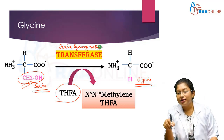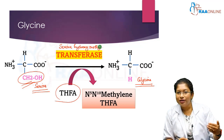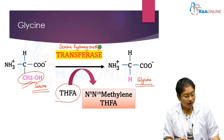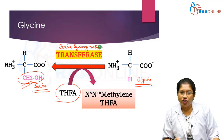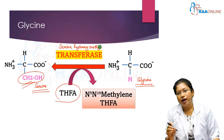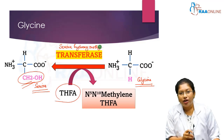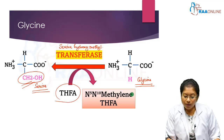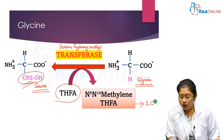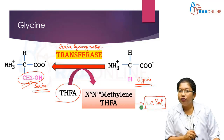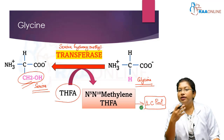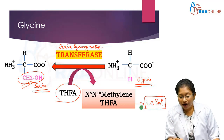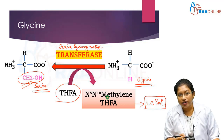To synthesize serine from glycine, you simply reverse the same reaction - the enzyme is also serine hydroxymethyltransferase. By this reaction you get serine from glycine. When synthesizing glycine from serine, the methyl group goes into the one-carbon pool as N5,N10-methylene tetrahydrofolic acid.